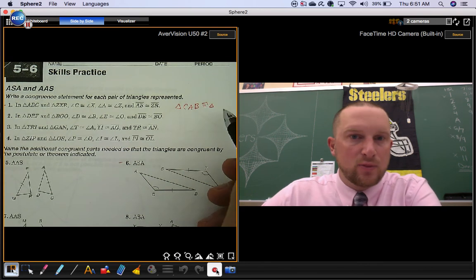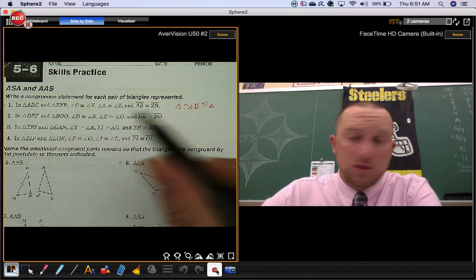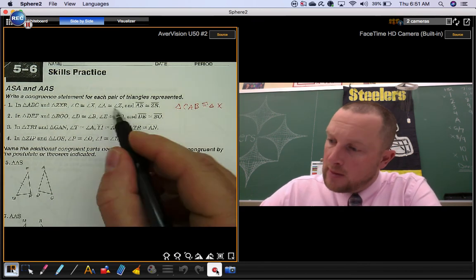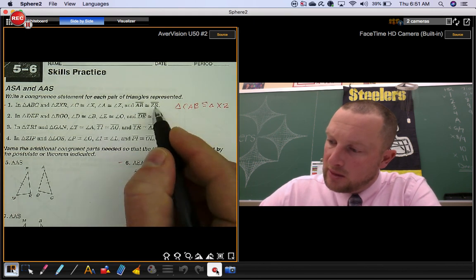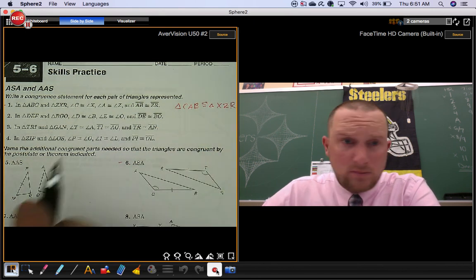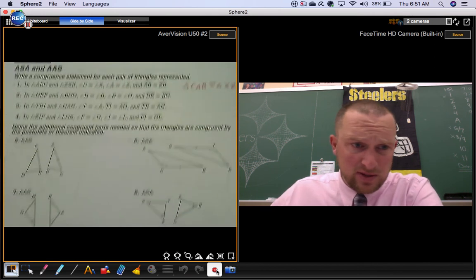We're going to match that up with the other triangle. C goes with X, A goes with Z, and B goes with R. That's all you do in that section. It's pretty simple.